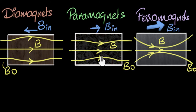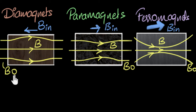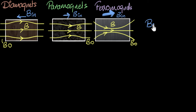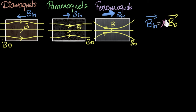The induced field clearly depends on the material — whether it's a diamagnet or ferromagnet, copper or nitrogen. But it also depends on the strength of the external field: if the external field goes to zero, the induced field goes to zero (these are temporary effects). If the external field gets stronger, the induced field also becomes stronger. To some degree of accuracy, we can write that B-induced is proportional to B-naught, and replacing the proportionality with a constant gives us chi (χ), called magnetic susceptibility.